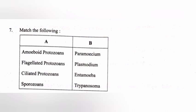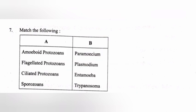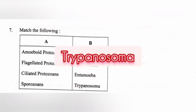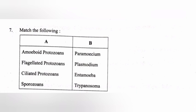Match the following. Answer: Amoeboid protozoans — Amoeba; flagellated protozoans — Trypanosoma; ciliated protozoans — Paramecium; sporozoans — Plasmodium.